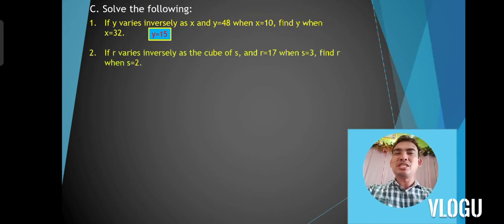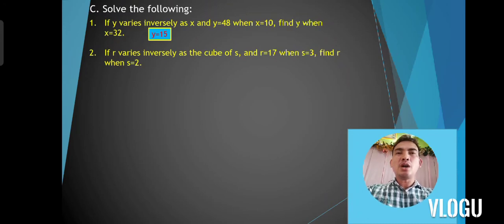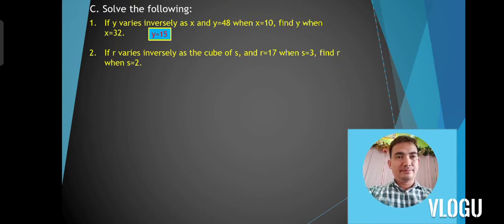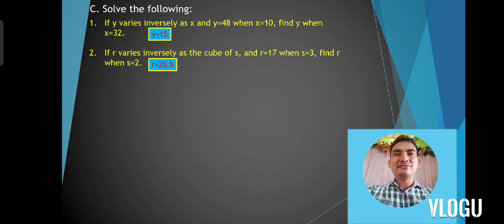Problem number 2: if r varies inversely as the cube of s and r is equal to 17 when s is 3, find r when s is 2. The correct answer is 25.5.